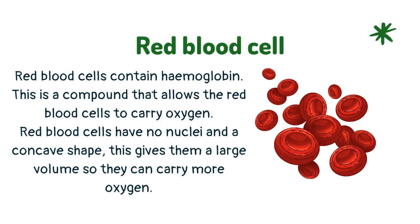Red blood cells contain hemoglobin. This is a compound that allows the red blood cells to carry oxygen. Red blood cells have no nuclei and a concave shape, which gives them a large surface area so they can carry more oxygen.